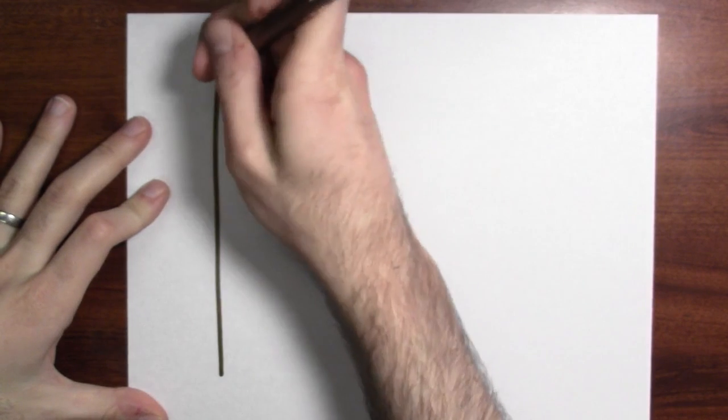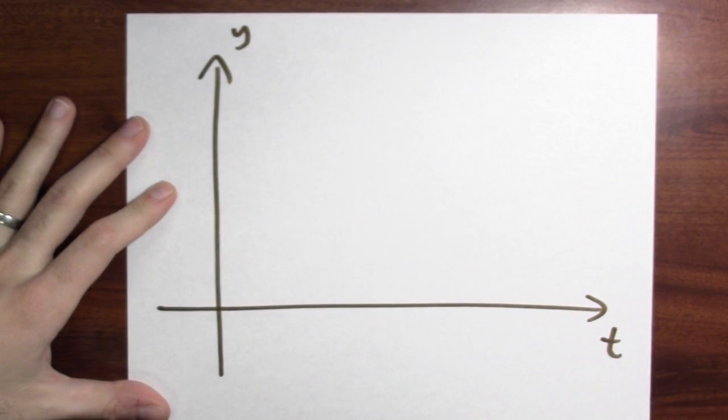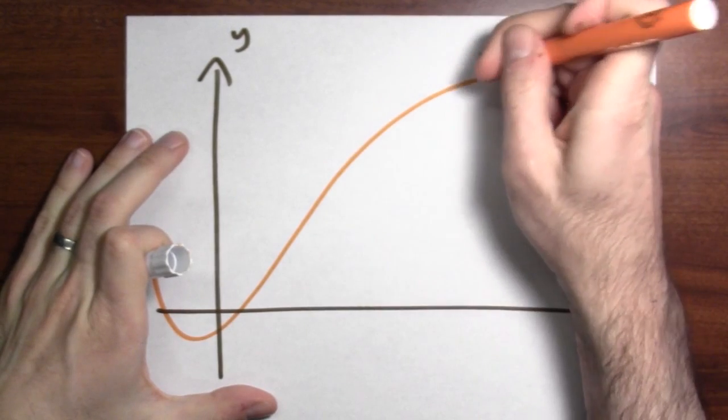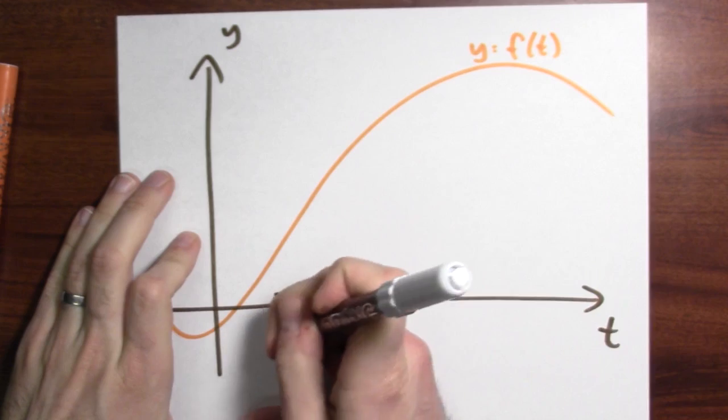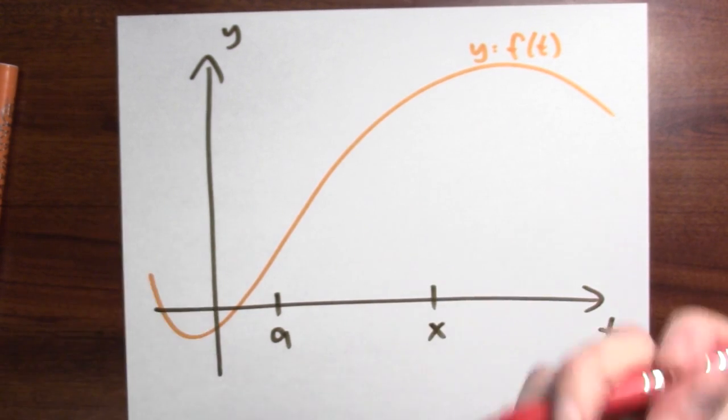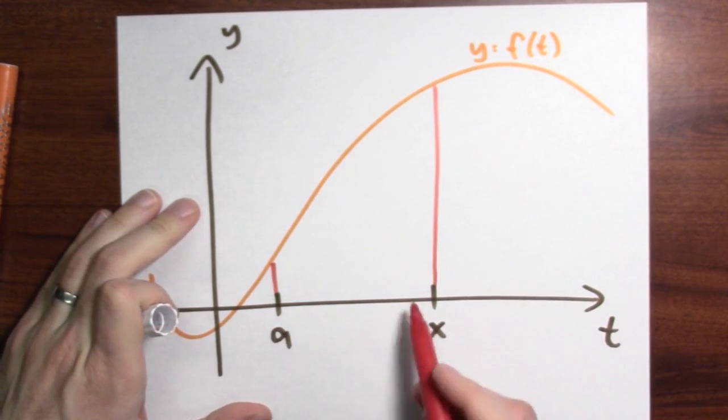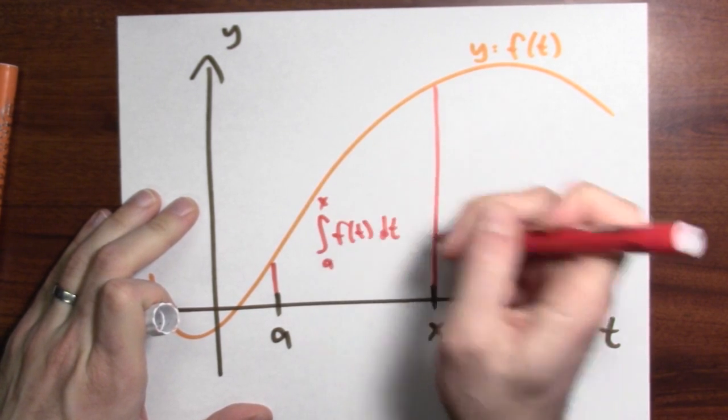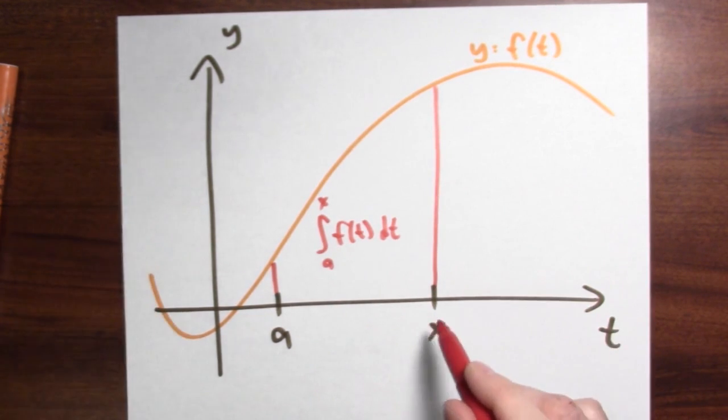Here's a graph that's particularly compelling. So I'll draw the coordinate plane. Here's the y axis. Here's the t axis in this case. And I'll draw some random looking graph. That'll be the graph y equals f(t). And then I'll pick some point, I'll call it a and some other point x. And then I'll look at the area under the graph between a and x. That's the integral from a to x of f(t) dt. That area is the accumulation function evaluated at x.